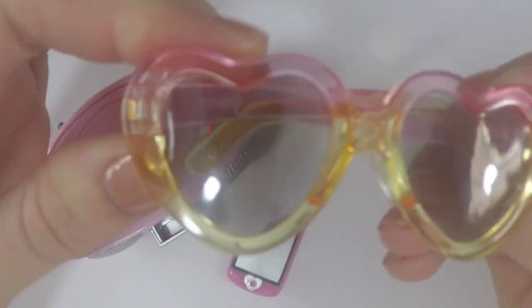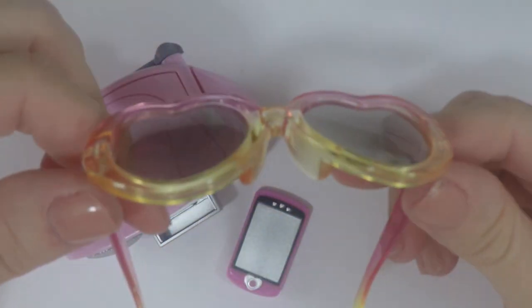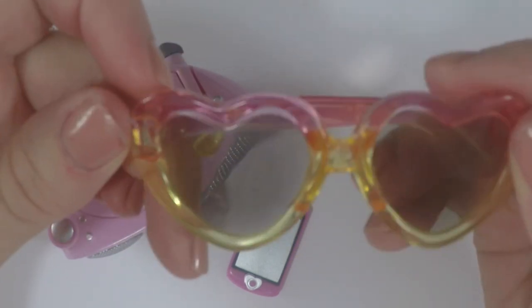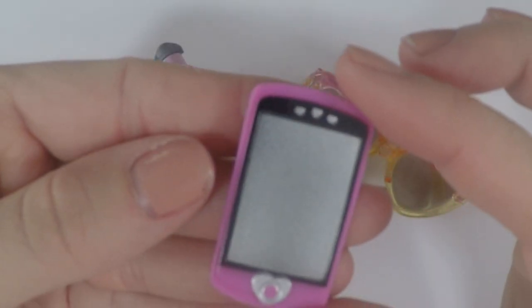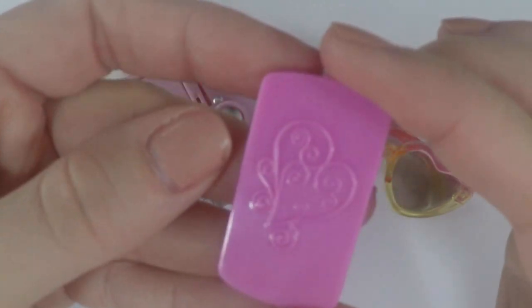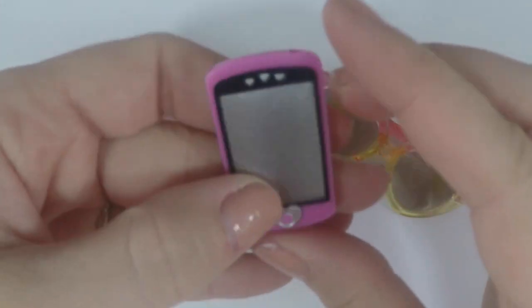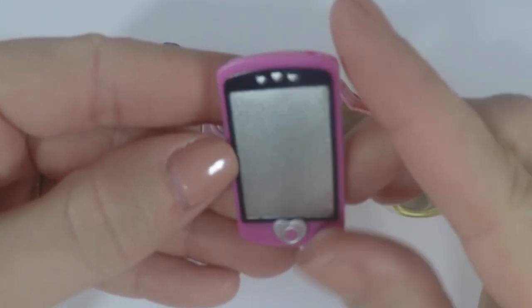These are the dolls accessories. You have heart shaped sunglasses, an ombre of pink and yellow. Then you either have an iPod or a phone, whichever way you want to look at it. It also has a plug in for the headphones.